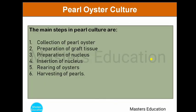The main steps of pearl culture are: collection of pearl oysters, preparation of graft tissues, preparation of nucleus, insertion of nucleus, rearing of oysters, and harvesting of pearls. All of these steps are included in the pearl culture technology, which will be covered in the next part.